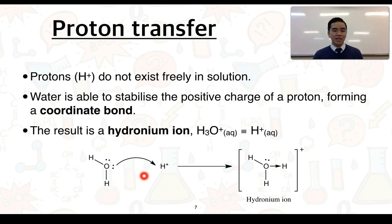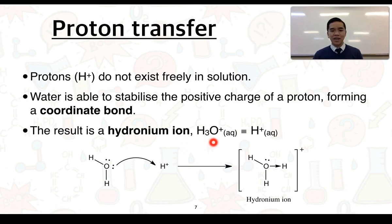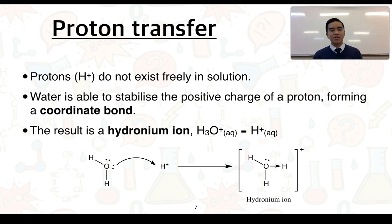With water having donated its electrons to stabilize the proton, it forms a species called the hydronium ion. This ion is made up of three hydrogens and one oxygen carrying a positive charge, shown in square brackets as H₃O⁺ (aq). For simplicity it is sometimes written as H⁺ (aq), but keep in mind that protons don't actually exist freely in solution.